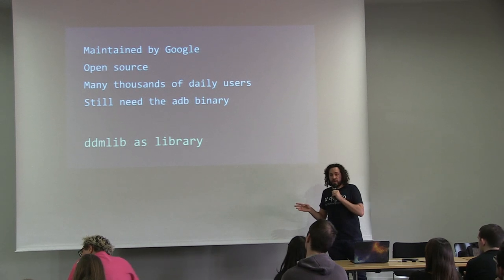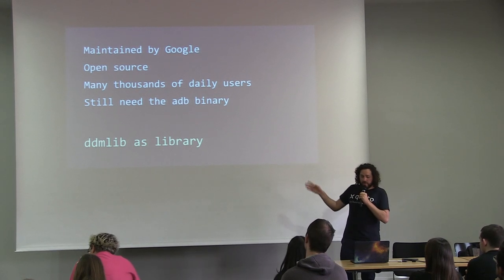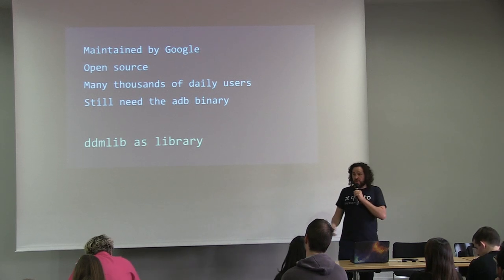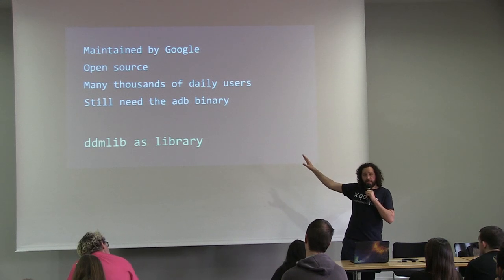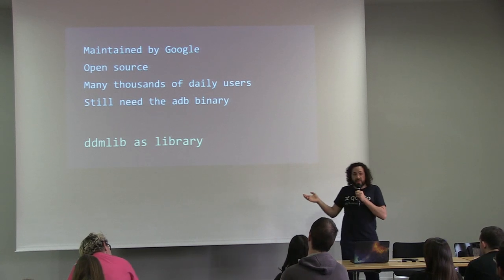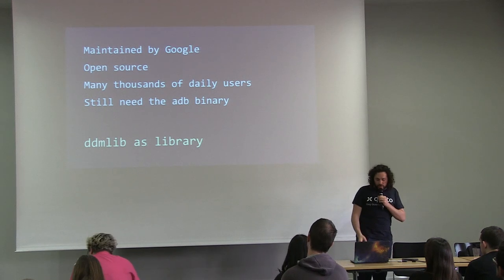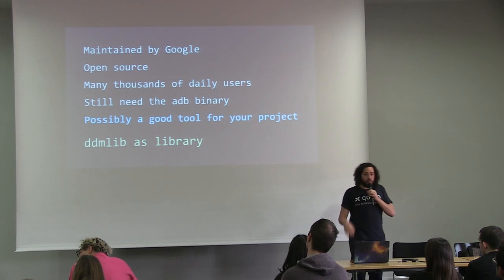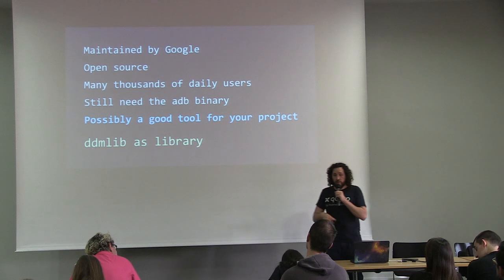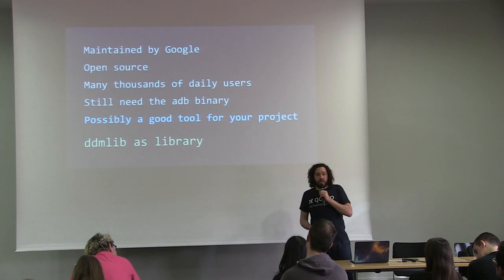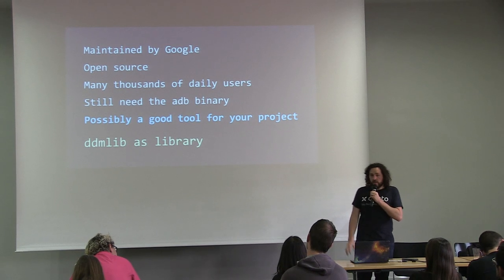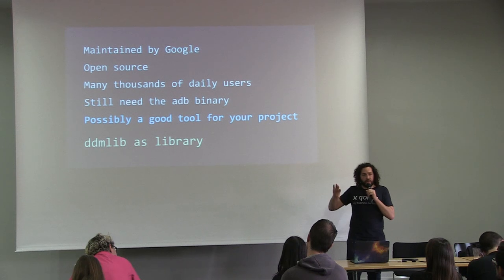Other important things about DDMLIB: it's maintained by Google, it's fully open source, and you have thousands of daily users — every day when you use Android Studio you are a DDMLIB user. The only drawback is it still needs the ADB binary to work. So if you want to communicate with an ADB device and your code runs on the JVM, definitely think about DDMLIB. It's released and available on the Google Maven repository, and you can use it today. Many tools use it, especially Gradle plugins.